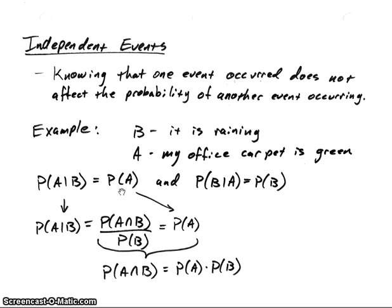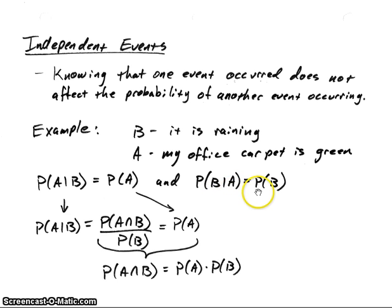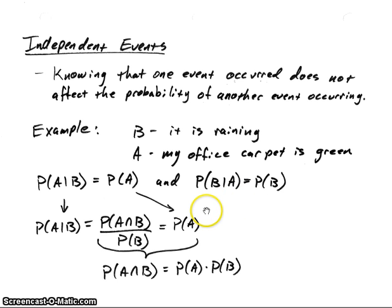We could also say that the probability that it's raining outside, given my office carpet is green, is equal to the probability that it's raining outside. In other words, my carpet has no effect on the weather — at least none that I know of. Probably none measurable.